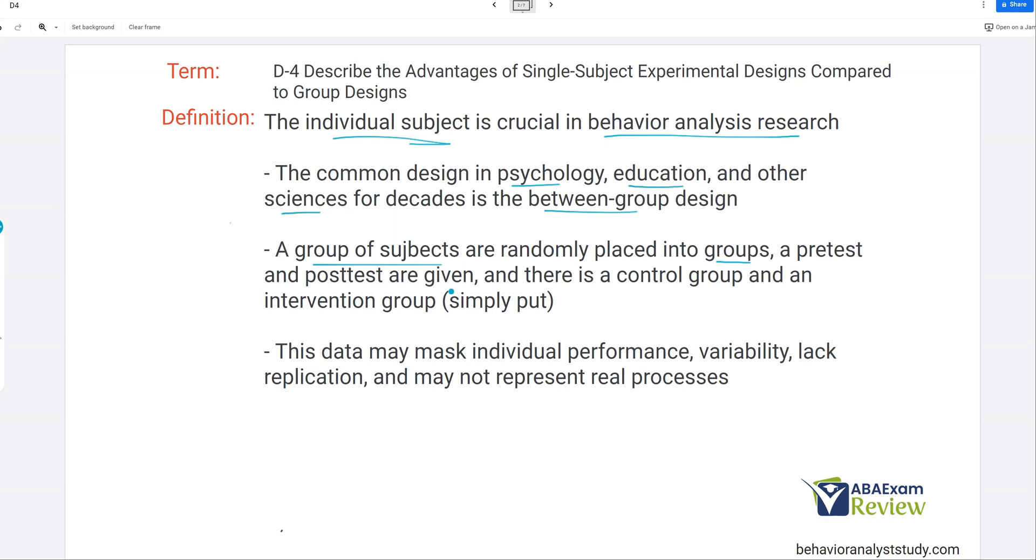So when you think of experiments prior to ABA, this is likely what you think of. You have group one, group two. Group one is your control, does not get intervention. Group two gets intervention. And we compare changes, pre-test to post-test, group to group. With single-subject, it's not how it works because each individual subject gets the intervention. And then we compare the subject's changes to their own changes, meaning they're their own control. So that's a primary difference.